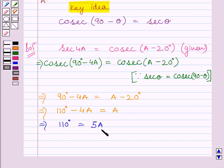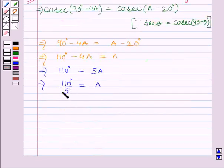Dividing both sides by 5, we get 110 degrees upon 5 equals A. Canceling common factor 5 from numerator and denominator, we get 22 degrees equals A, or simply A equals 22 degrees.